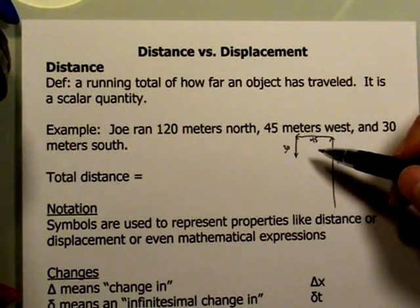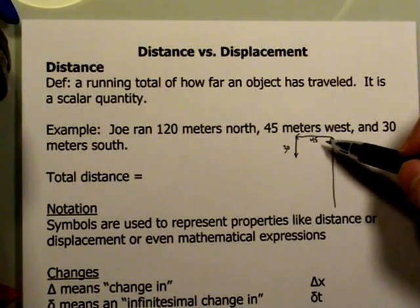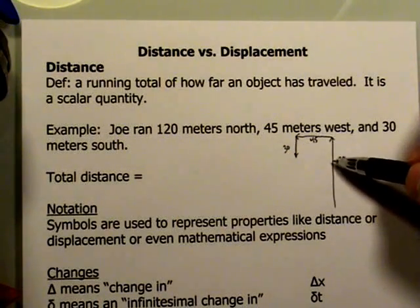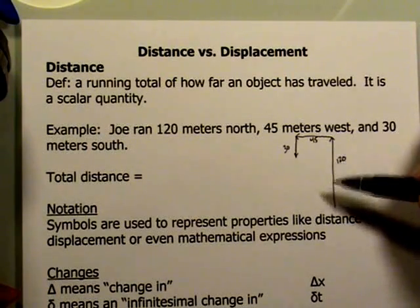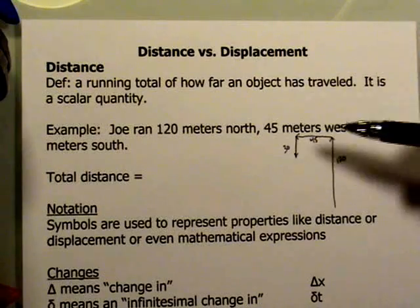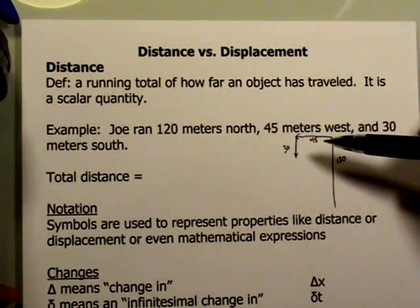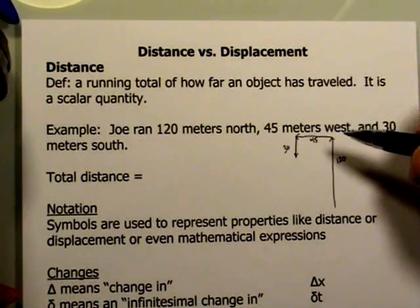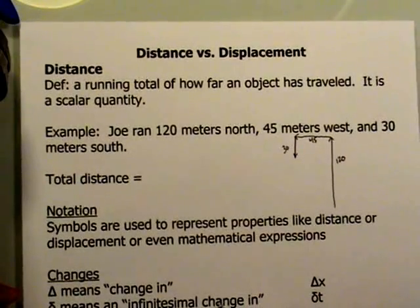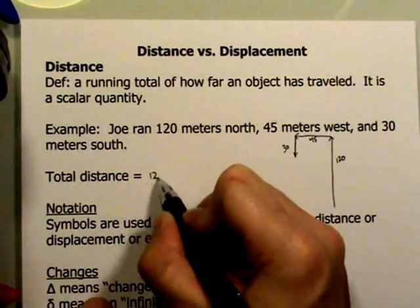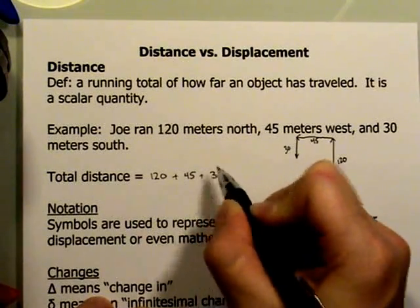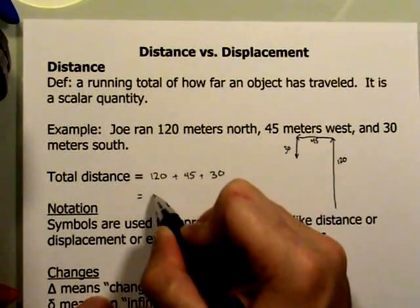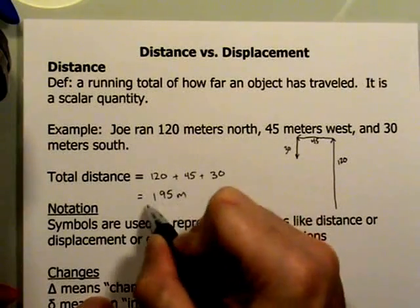Distance, unlike displacement, does not care whether we went north, south, east, or west — it just continually adds. It's very much like the odometer on your car. The odometer doesn't care whether you go north or south on a street, east or west; it just keeps constantly adding. It's always a positive number. So in this case, our total distance would be 120 plus 45 plus 30, giving us a total distance of 195 meters.